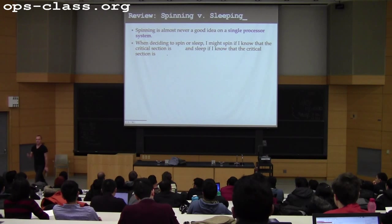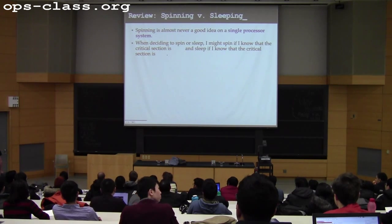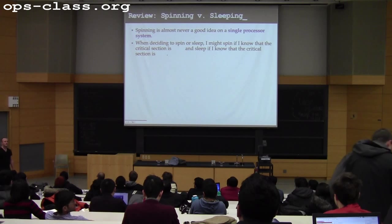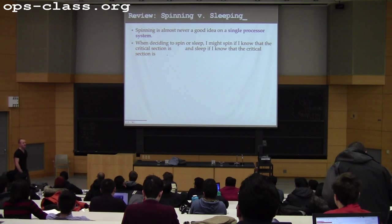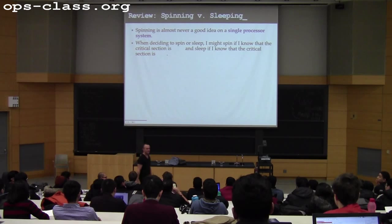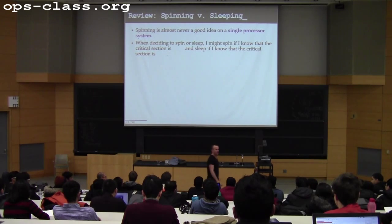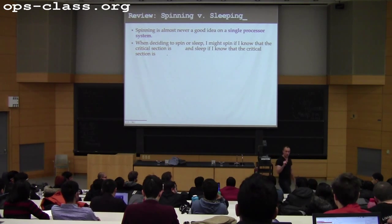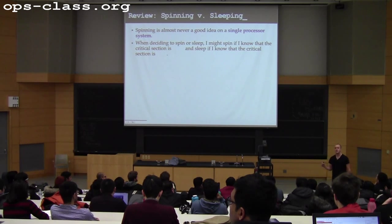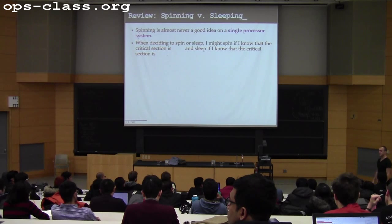If I'm trying to decide whether to spin or sleep, I have two different locks. What helps me make the decision? If the critical section is very short, you want to spin. If the critical section is long, you sleep.